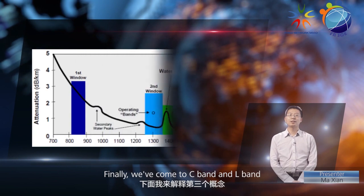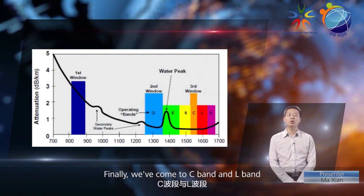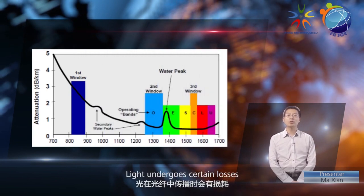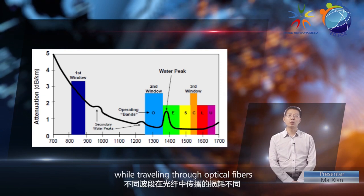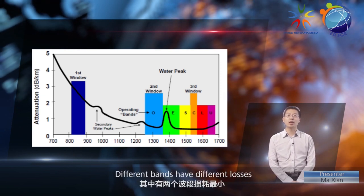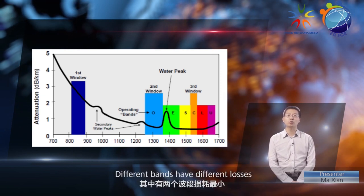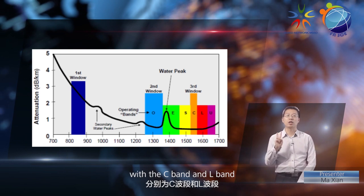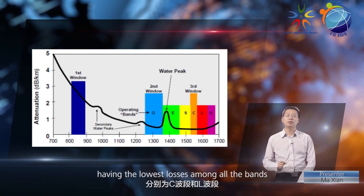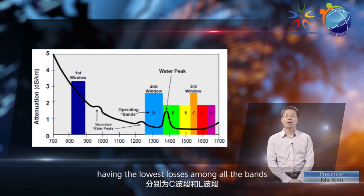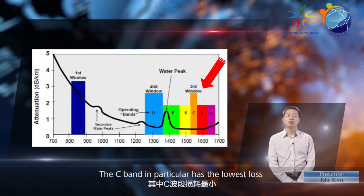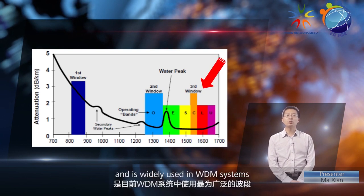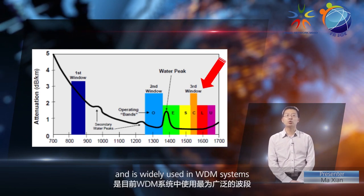Finally, we've come to C-band and L-band. Light undergoes certain losses while traveling through optical fibers. Different bands have different losses, with the C-band and L-band having the lowest losses among all the bands. The C-band in particular has the lowest loss and is widely used in WDM systems.